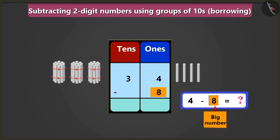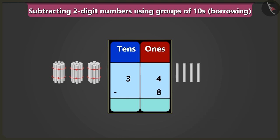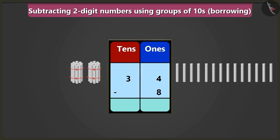We cannot subtract a big number from a small number. So we will borrow one ten from the number in the box of tens. That means the number in the place of ones can borrow one ten from its neighbor. Now we will write one ten and four ones — fourteen — in the box of ones, and we will write two tens instead of three tens in the box of tens.